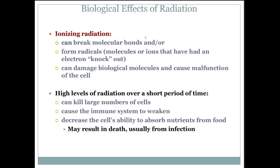Ionizing radiation can break molecular bonds and form radicals — molecules or ions that have had an electron knocked out, leaving a free unpaired electron on the atom. This can damage biological molecules and cause malfunction of the cell. High levels of radiation over a short period of time can kill large numbers of cells and cause the immune system to weaken. It could also decrease the cell's ability to absorb nutrients from food, which may result in death, usually from an infection.